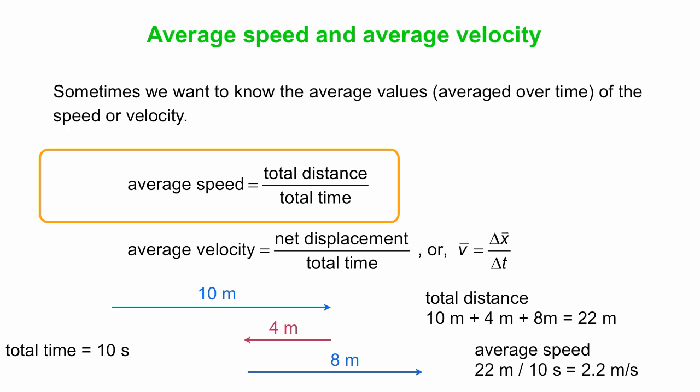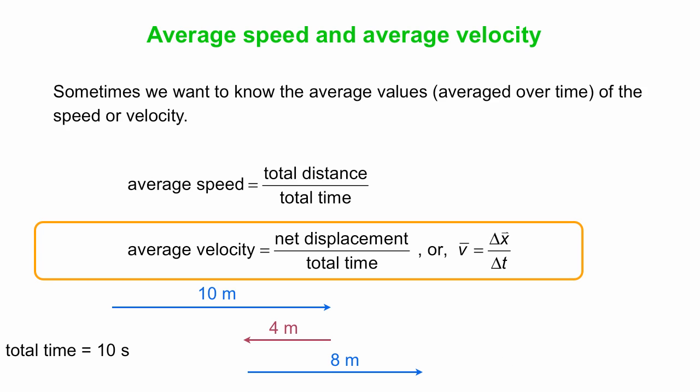Average velocity on the other hand, let's see how you calculate that. So now you have to worry about the different directions. So here we'll say, it's a one-dimensional situation, we'll say positive is to the right. So we do plus 10 meters, minus 4 meters for the one left, and then 8 meters to the right, plus 8 meters.